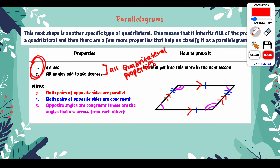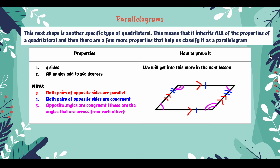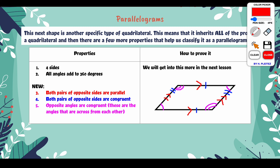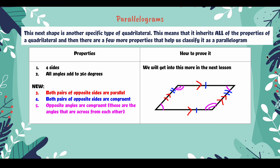What makes a parallelogram a parallelogram? First, both pairs of opposite sides are going to be parallel. The singular arrows mean that this side and this side are parallel, and then the double arrows show that these two sides over here are parallel as well. The properties along with the markings are color-coded — number three is red and the labeling for the parallel sides is also red.